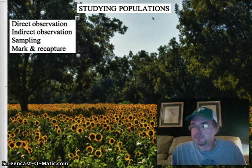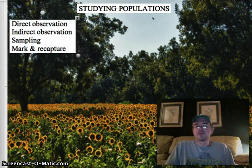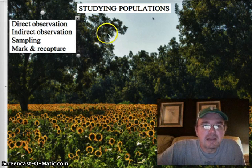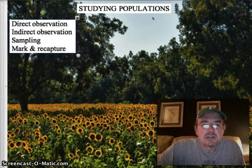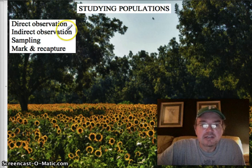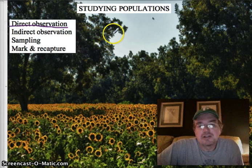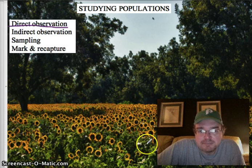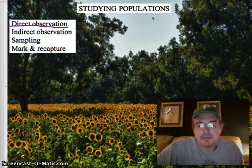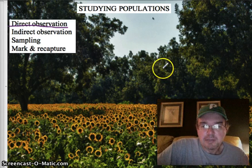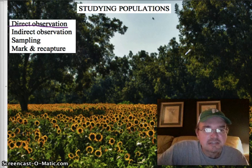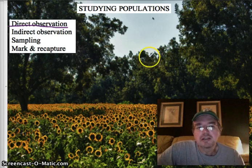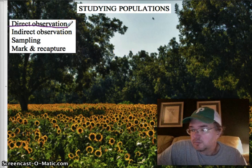So how do they do that? One way they could do that is by direct observation. Now direct observation is only practical in certain instances. If you were to find the population of this field of sunflowers, that would take an unbearable amount of time. If you were to count the population of birds in these trees, that's something you couldn't really do with direct observation, so you'd have to use one of these other methods.